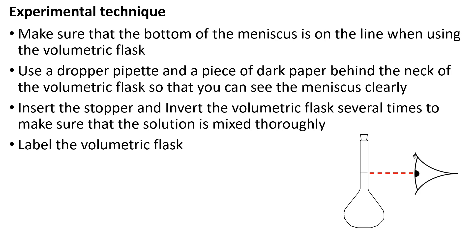As well as the mass of solid, the volume of the solution is also a critical measurement. Make sure that the bottom of the meniscus is on the line when using the volumetric flask. Use a dropping pipette and a piece of dark paper behind the neck of the volumetric flask so that you can see the meniscus clearly. Insert the stopper and invert the volumetric flask several times to make sure that the solution is mixed thoroughly. Label the volumetric flask.